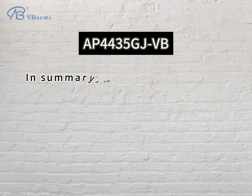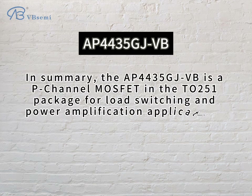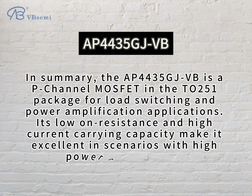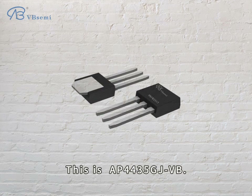In summary, the AP4435 GJVB is a P-Channel MOSFET in the 2R51 package for load switching and power amplification applications. Its low on-resistance and high current carrying capacity make it excellent in scenarios with high power requirements.